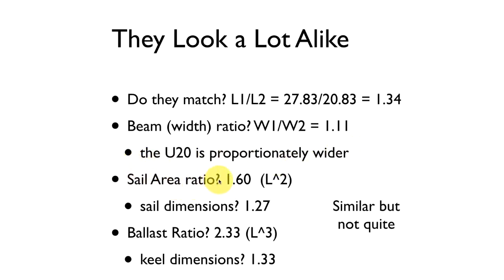The sail area ratio—if we compare the square meters of sail each has—we get about 1.6. That seems much larger than 1.34, but remember this is scaling a length dimension.